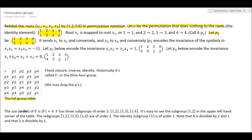Let's define e as the permutation that does no swapping of the roots. In the notation, 1,2,3,4 on top with 1 goes to 1 below, 2 to 2, 3 to 3, 4 to 4. I also call e as p1. Now I define permutation p2 with 1 going to 2, 2 to 1, 3 to 4, and 4 to 3 — this captures the observation that x1·x2 = x3·x4 = −1.